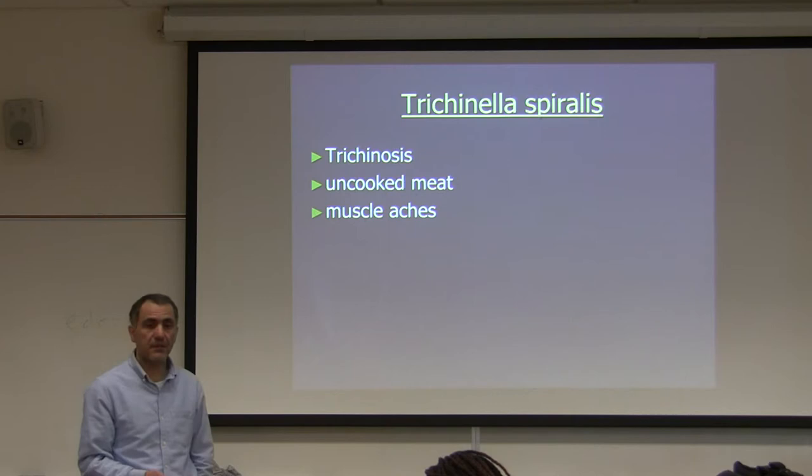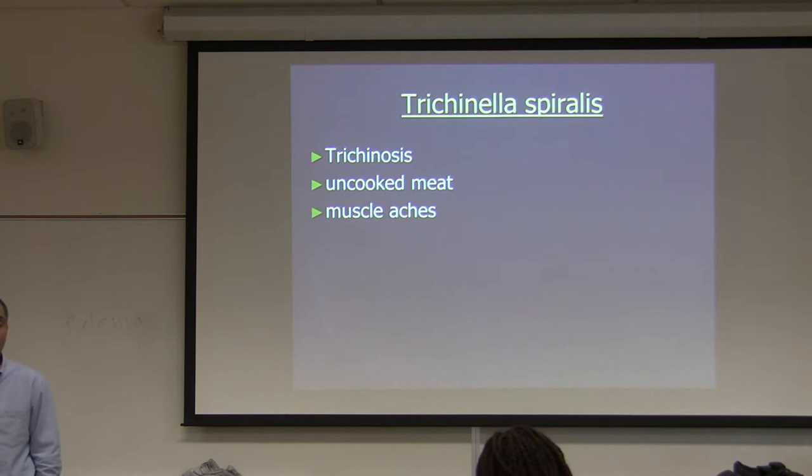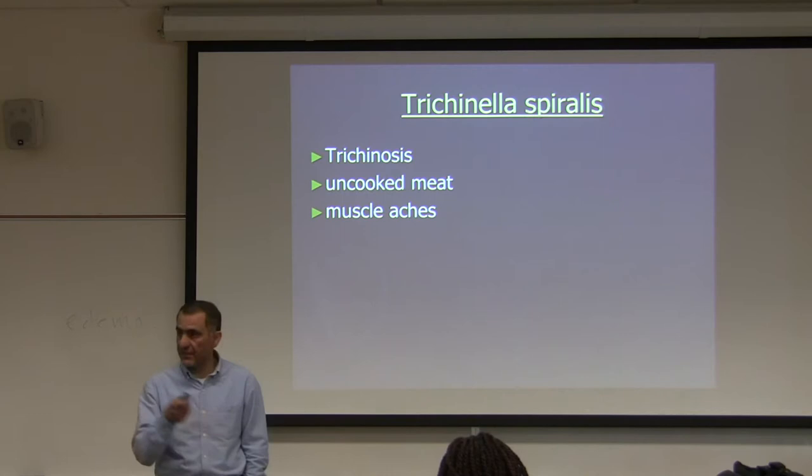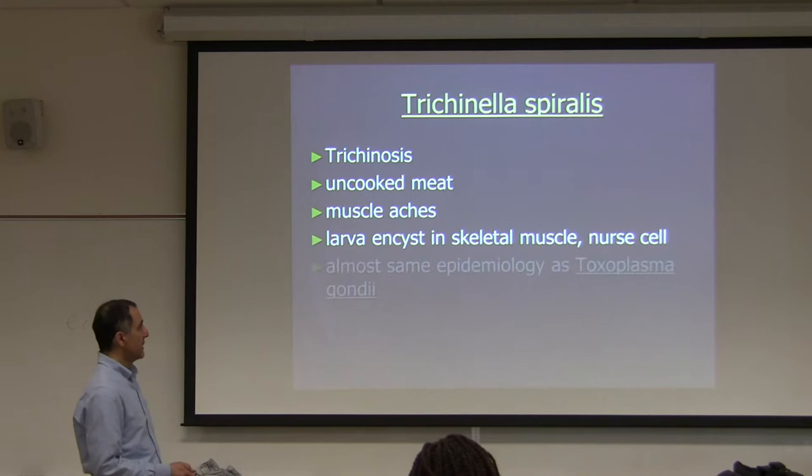In heavy infection, the person can eventually die. In low infection, you may have a few nurse cells here and there. You kill the adult with medication, stopping production of more nurse cells. The nurse cells have a life expectancy and will eventually die. Larvae exist in skeletal muscles inside the nurse cell.